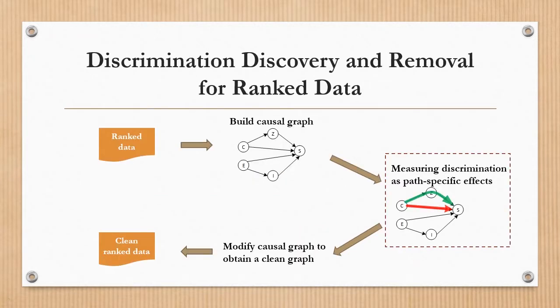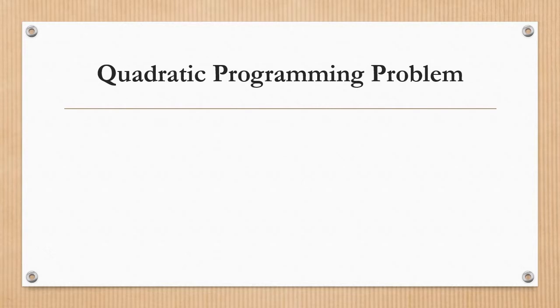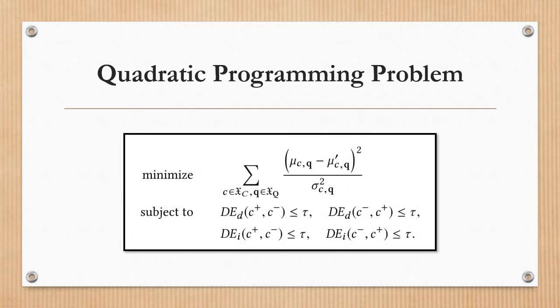The next step is to modify the causal graph to remove discrimination. We formulate the modification problem as a convex programming problem, where the objective is to minimize the utility loss, and the constraints are to enforce non-discrimination.